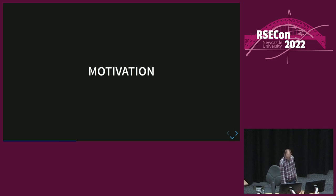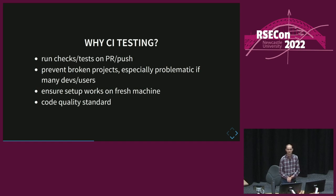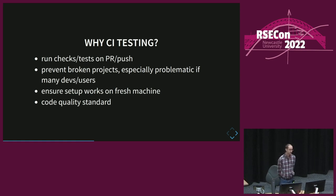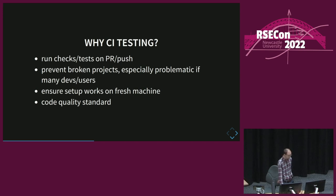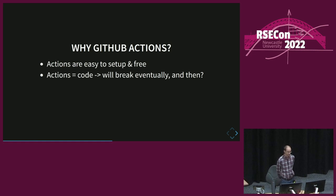The motivation: why are we doing this? First question — why is CI testing even worthwhile? As I explained, we run checks or tests, sometimes deployment scripts on every pull request or push, to prevent broken projects. This is especially important if you have lots of users or other developers who need a working repo to continue developing. This also ensures a setup on a fresh machine, because every time the GitHub action runs on the server, you get a clean system where you have to set up everything again. So you know if it works when someone new comes and wants to use your tool. You can also use it to make sure the code quality is fulfilling a certain standard.